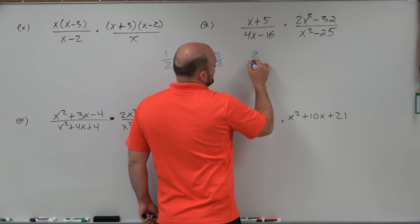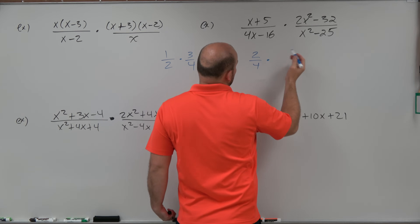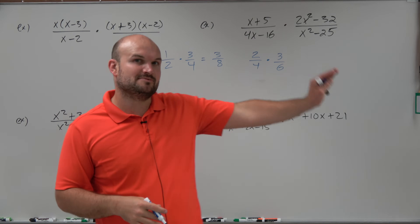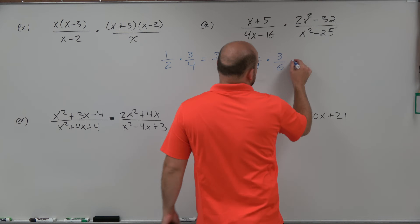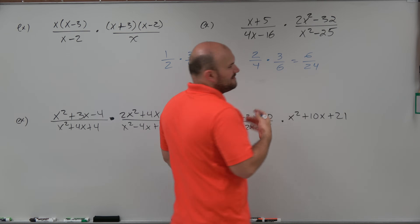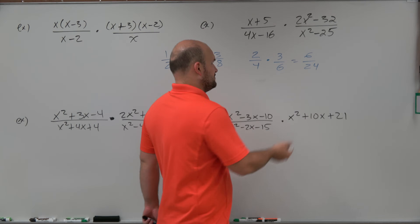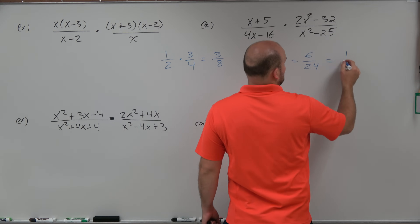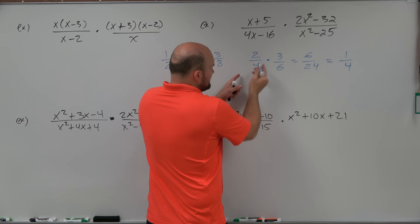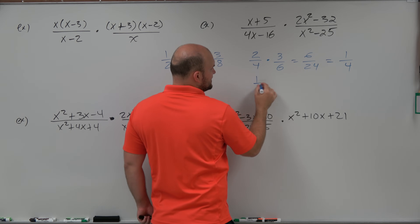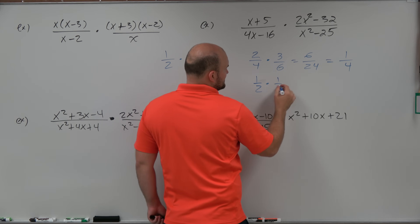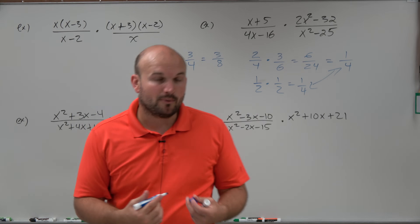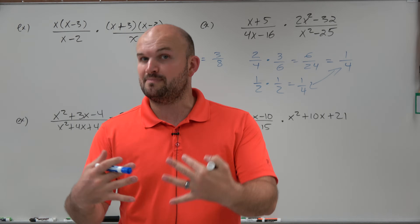For instance, if I had 2/4 times 3/6, instead of doing 2 times 3 which would be 6, and 4 times 6 which would be 24, and then having to reduce — 6 goes into 24 four times and 6 goes into 6 once, giving us 1/4 — we can simply simplify each fraction first: 2/4 is 1/2, and 3/6 is 1/2, which still gives you 1/4. So our important thing is we want to simplify our expressions as much as possible.